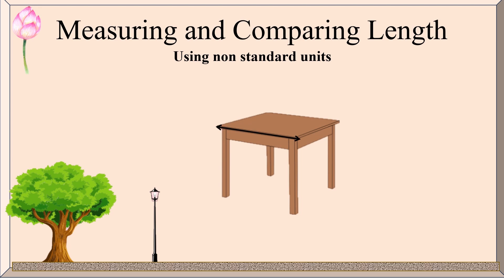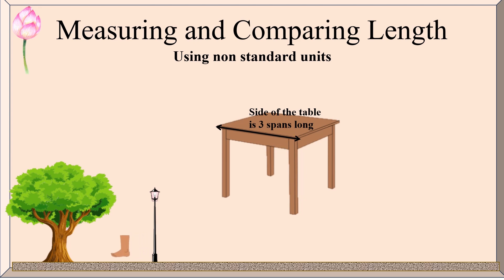For measuring length using non-standard units, let's take a table and measure the length of its side using span. Span is the distance from the tip of the little finger to the tip of the thumb when the fingers are stretched. One span, two, three — the side of the table is three spans long. The foot span is the length of the foot from the heel to the tip of the longest toe.